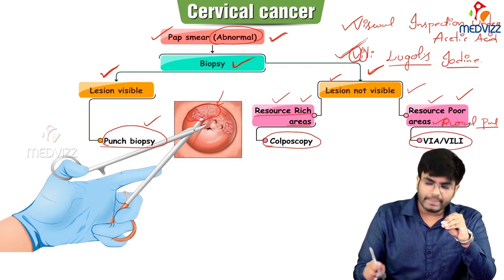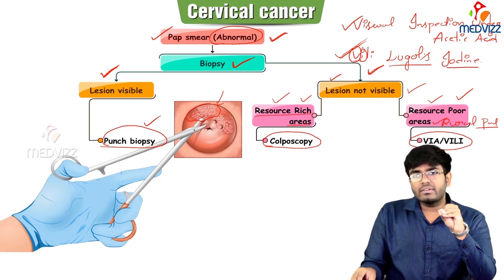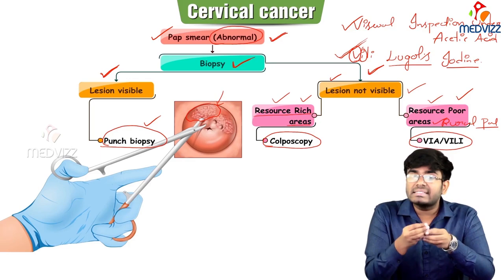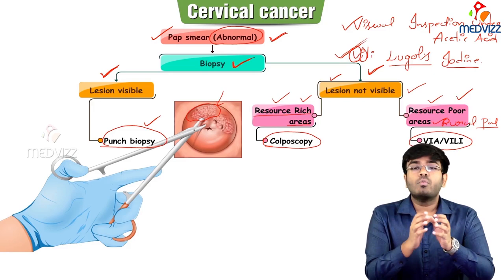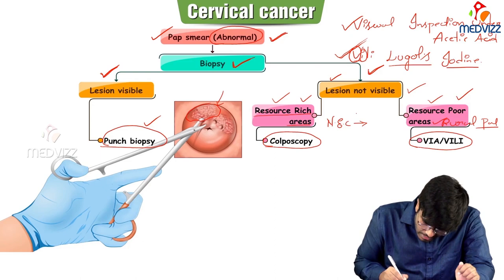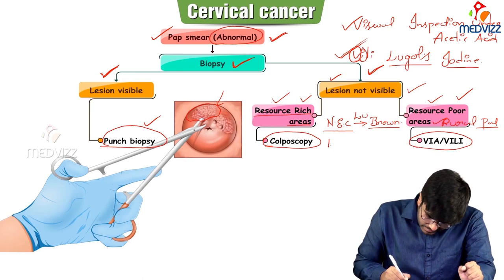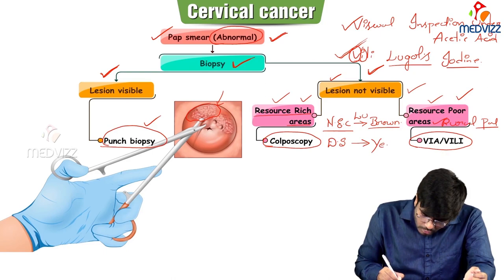Here are the gross images demonstrating the findings. A normal cervix shows no aceto-white areas and the whole cervix is brownish in color with Lugol's iodine. In low-grade squamous intraepithelial lesion or CIN1, you can see some aceto-white areas after keeping 5% acetic acid, and yellowish unstained areas with Lugol's iodine. In H-SIL, you can see larger aceto-white areas and more yellow-colored unstained areas with Lugol's iodine.